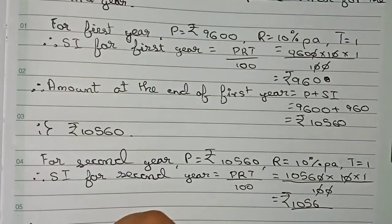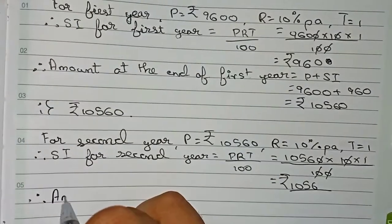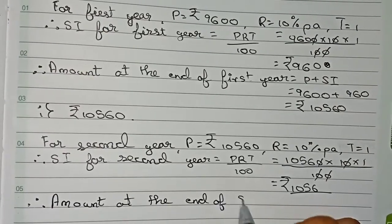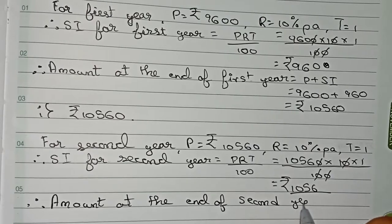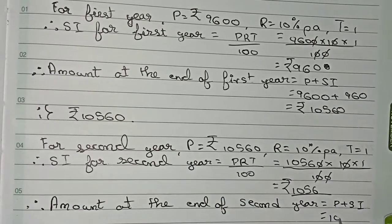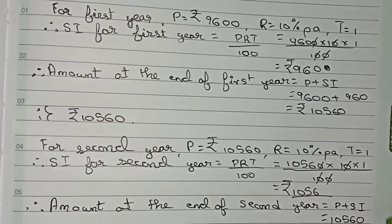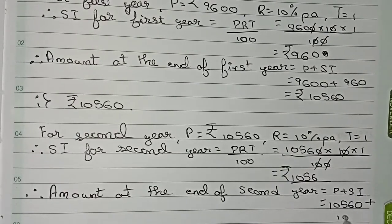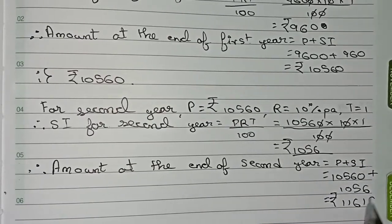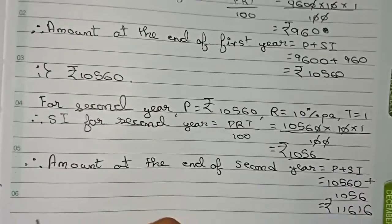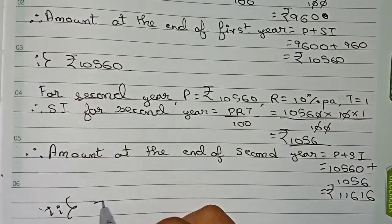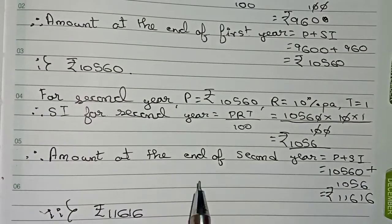Now to find the amount at the end of the second year using the formula principal plus SI: the principal is ₹10,560 plus ₹1,056, which equals ₹11,616. Therefore the answer for question number two — the sum due at the end of the second year — is ₹11,616.